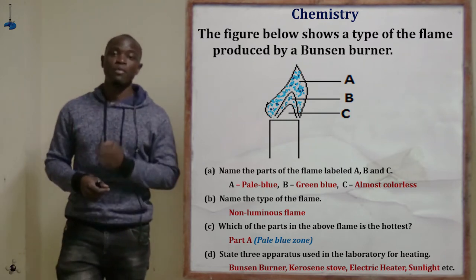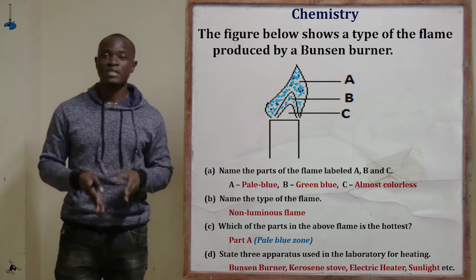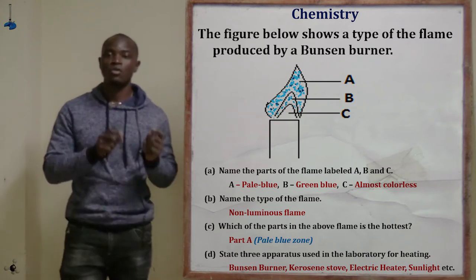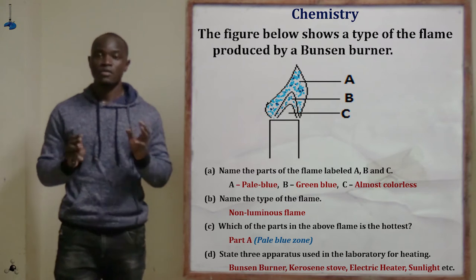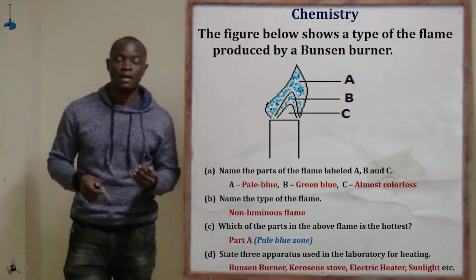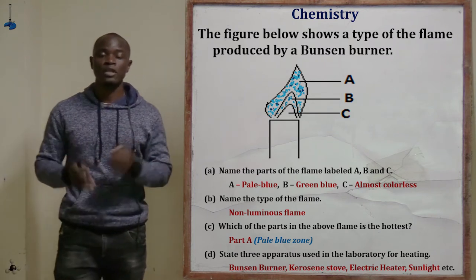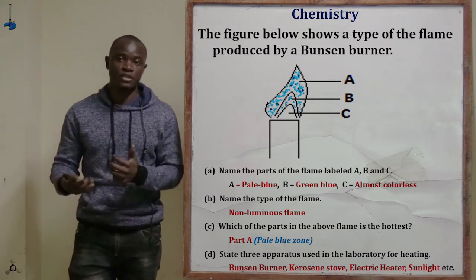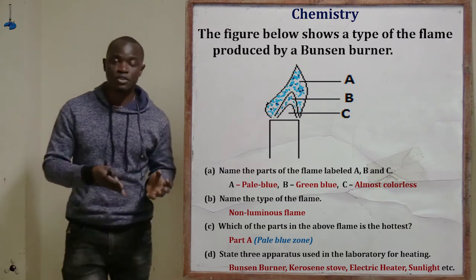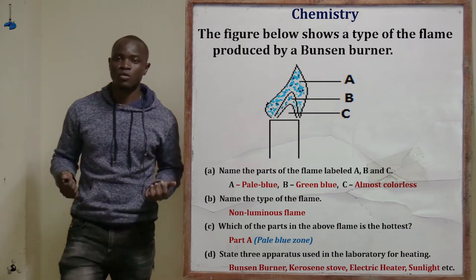Never include '-ish' in naming colors in chemistry — saying 'blueish' or 'pale blueish' will get you the wrong answer. Region B, below the pale blue region, is referred to as the green-blue region. Region C, below the green-blue region, is called the almost colorless region, or the region of unburnt gases.